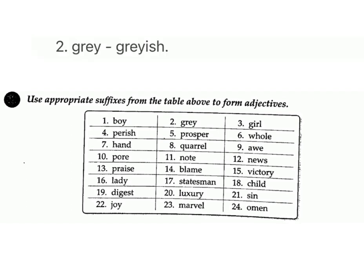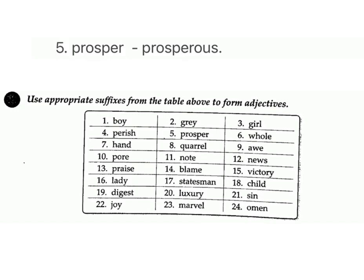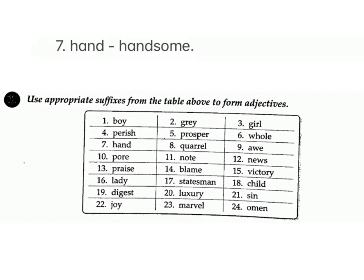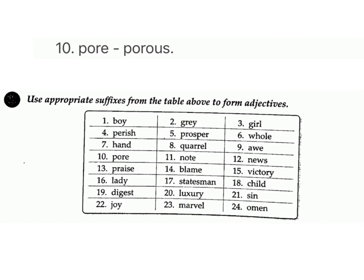1. boy – boyish; 2. gray – grayish; 3. girl – girlish; 4. perish – perishable; 5. prosper – prosperous; 6. whole – wholesome; 7. hand – handsome; 8. quarrel – quarrelsome; 9. awe – awesome; 10. poor – porous.